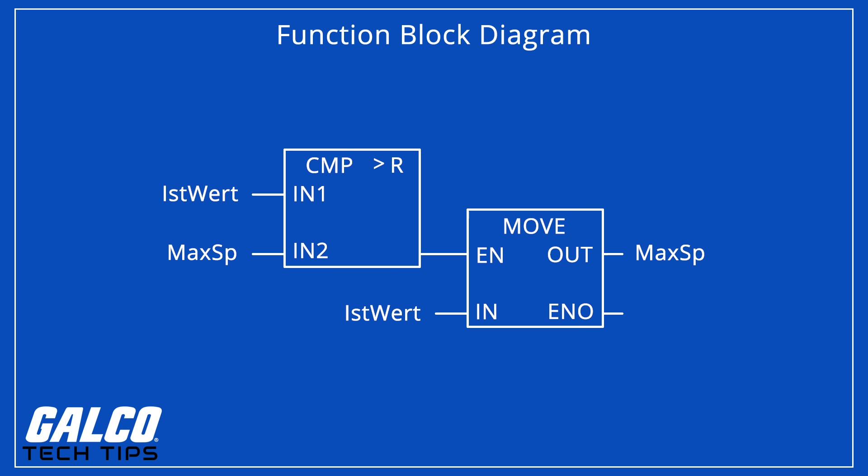Function block diagrams visualize signal and data flows on a block diagram and show the function between input variables and output variables. A function is described as a set of blocks with the input and output variables connected by connection lines. An input variable could be connected to the input of a block, and an output of a block could be connected to an input of another block or to an output variable.